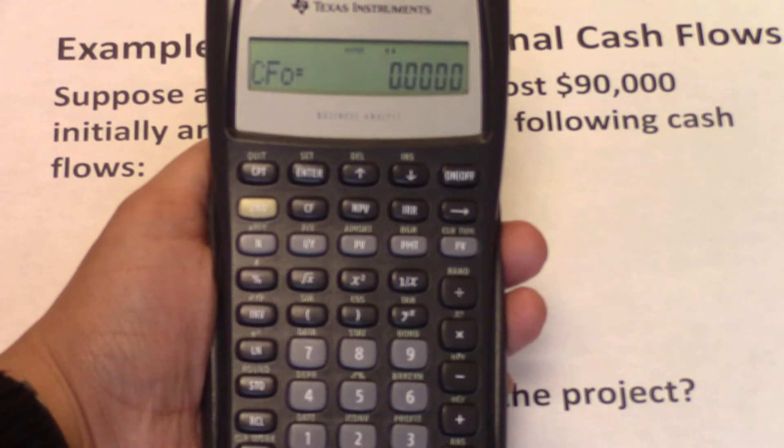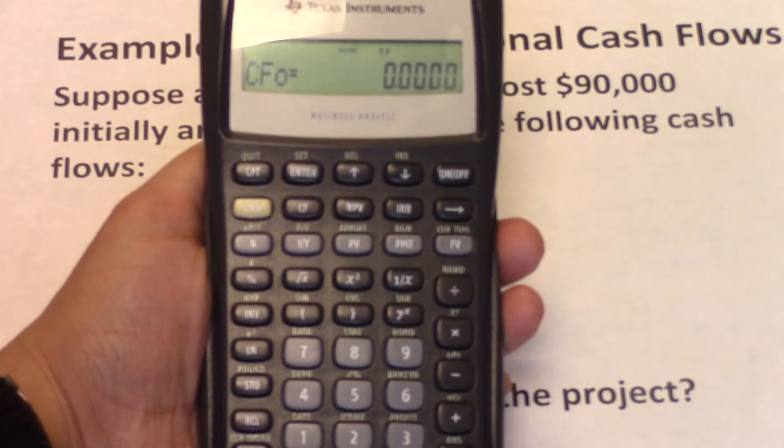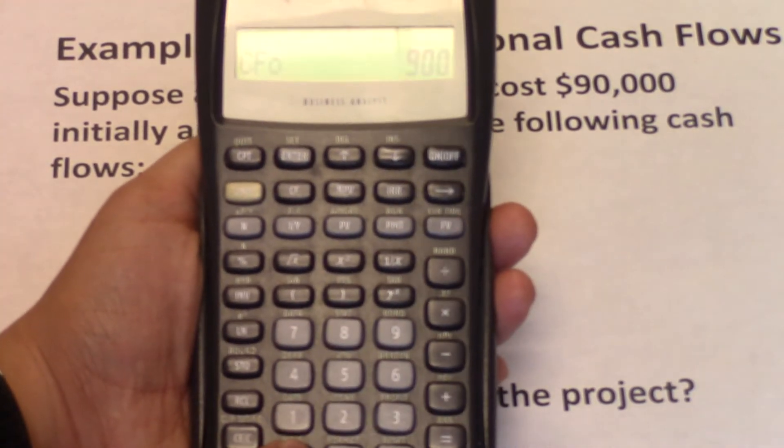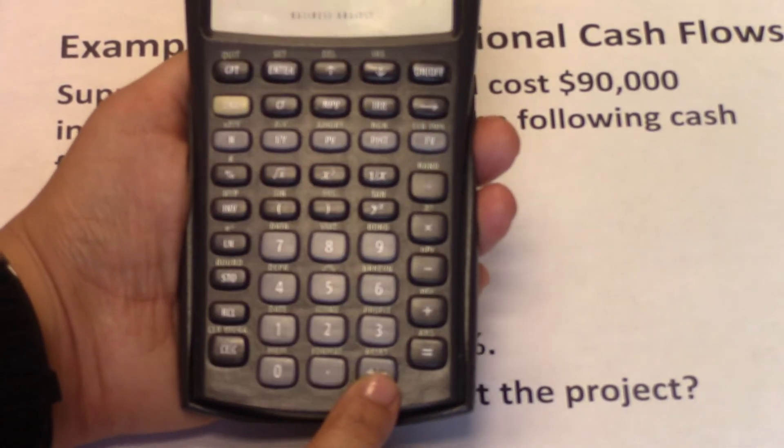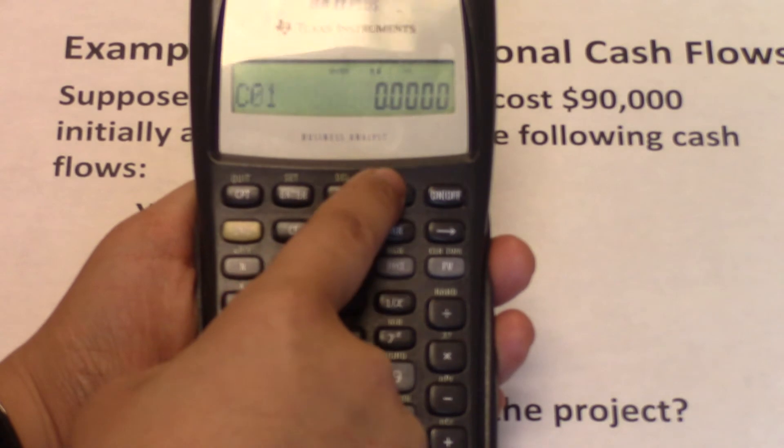So hit CF again. And this is the cash flow at time zero. We do know that we are investing $90,000. So we need to input negative $90,000. So $90,000 and then you hit negative and then enter, down arrow.